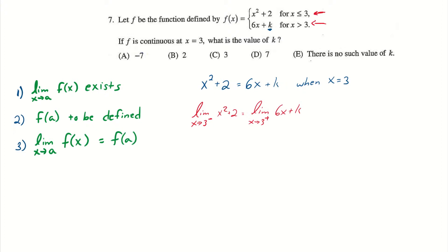Well, we know that when we evaluate limits, we can just direct substitute if that works. So I plug in 3 and I get 9 plus 2 is equal to, now I plug in 3 from this one, I get 18 plus k. And I can just solve this for k. So 11 equals 18 plus k is equal to negative 7. Okay, so we get the answer of a.